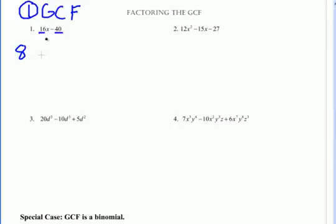To factor out the GCF, you simply divide each term by the GCF. So I'm going to divide each term by 8 to see what's left inside, and I'll get 2x minus 5. Now afterwards you should check to see what size the polynomial that's left is to see if it'll factor any further, but in this video we're just factoring out the GCF, so we're not going to worry about that.